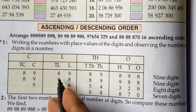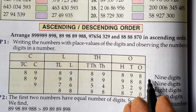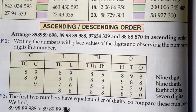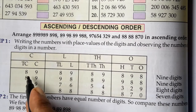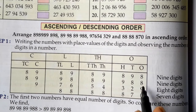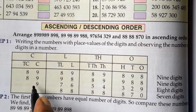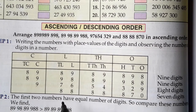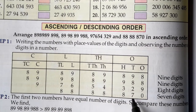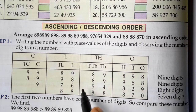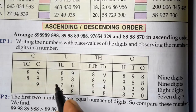Looking at the four numbers: the first and second numbers each have 9 digits, the third number has 8 digits, and the last number has 7 digits. In ascending order, we first write the smallest number — that is the 7-digit number — then the 8-digit number. For the two 9-digit numbers, we compare them further.